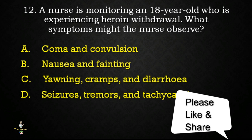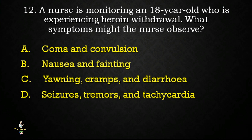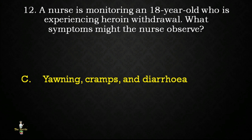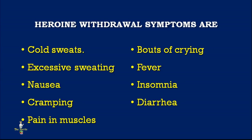Next question: a nurse is monitoring an 18-year-old experiencing heroin withdrawal symptoms. What symptoms might the nurse observe? Options: coma and convulsion; nausea and fainting; yawning, cramps and diarrhea; or seizures, tremors and tachycardia? Correct answer is yawning, cramps, and diarrhea. Heroin withdrawal symptoms include cold sweats, excessive sweating, nausea, cramping, pain in muscles, bouts of crying, fever, insomnia, and diarrhea.